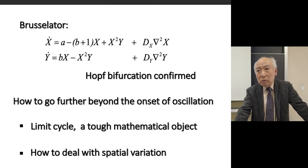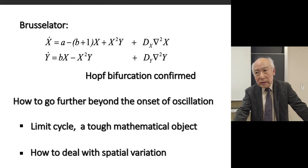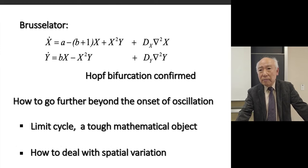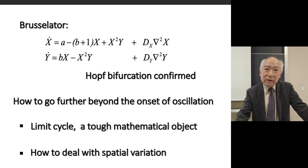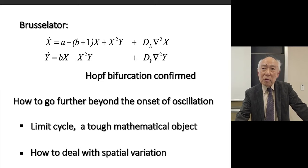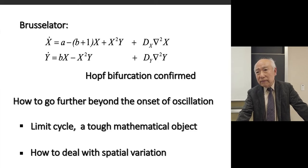One such model was the so-called Brusselator, invented by Prigogine's group in Brussels. The corresponding two-component reaction-diffusion equations have this form. It was easy to confirm a spatially uniform steady solution to exhibit Hopf bifurcation. But how to go further beyond the onset of oscillation was the first problem to be faced with. Indeed, a limit cycle oscillator seemed to be a very tough mathematical object. And how to deal with spatial variation was also a problem.